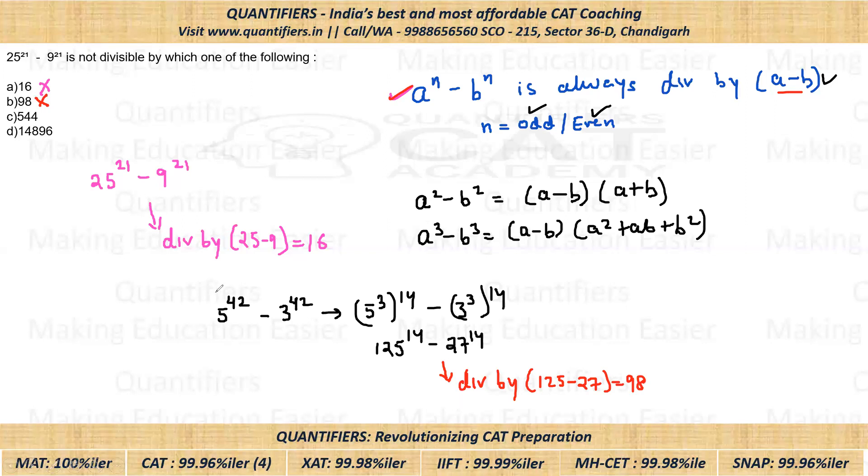Similarly students, if you look at this equation 5 to the power 42 minus 3 to the power 42, if you pay attention, 42 is also a multiple of 6, right? 42 is also a multiple of 6. So I'll write it here. This can be written as 5 to the power 6 whole to the power 7, and similarly students, 3 to the power 42 I'll write as 3 to the power 6 whole to the power 7.